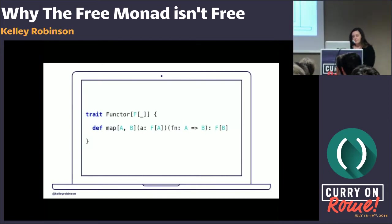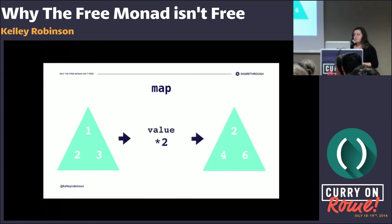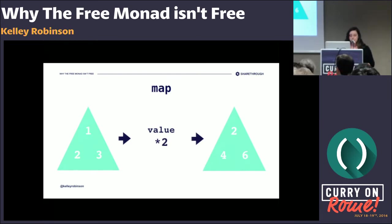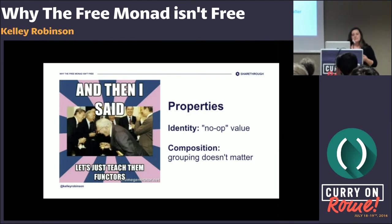A functor is a family of types that has a map method. The map method will apply some function to everything in that family and return a new container. You can think of it as applying a function — in this case multiplying all values by two — and returning a new container with all those values multiplied. Like monoids, functors have properties: the identity value is the no-op function that doesn't change the input when used with map, and composition says that chaining a bunch of map operations is the same as doing one giant map with all the logic in it.